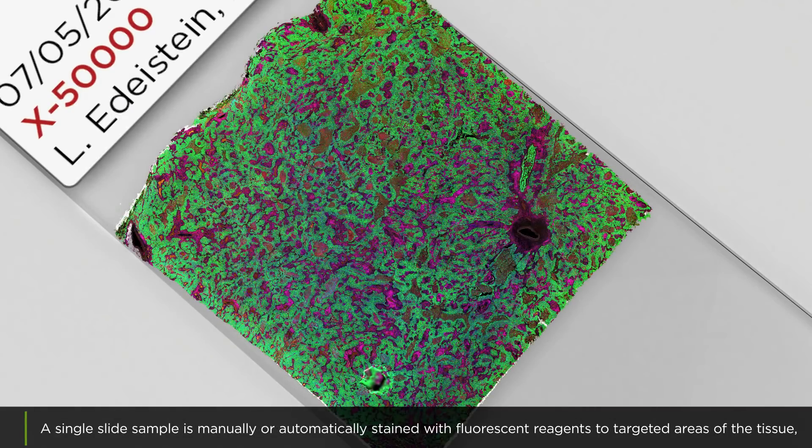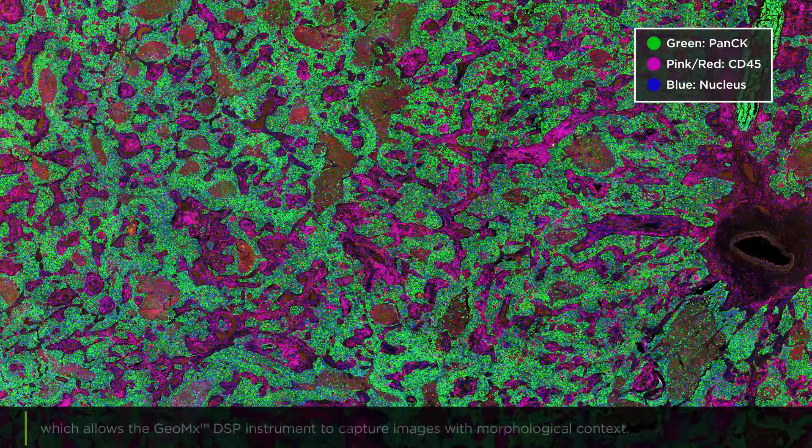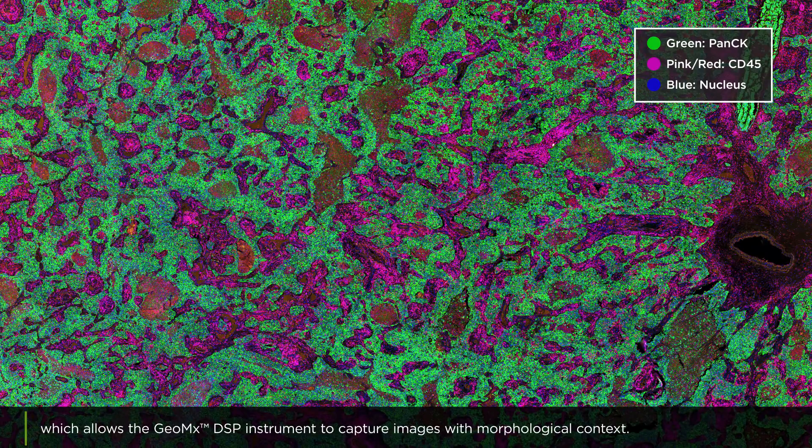A single slide sample is manually or automatically stained with fluorescent reagents to targeted areas of the tissue, which allows the GeoMix DSP instrument to capture images with morphological context.